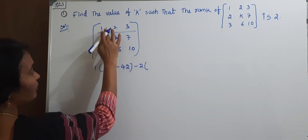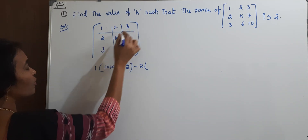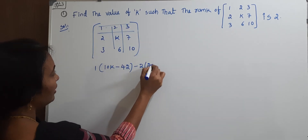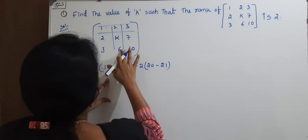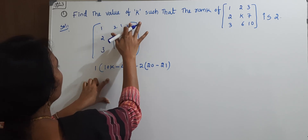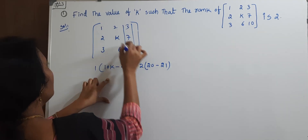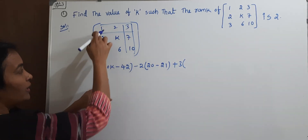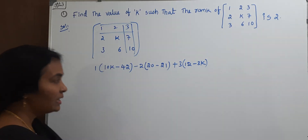Next, minus 2 times: for the second element, remove the corresponding row and column — AD gives 20, minus BC gives 21. Next, the last element is 3. Remove the corresponding row and column — AD gives 12 minus 3k.